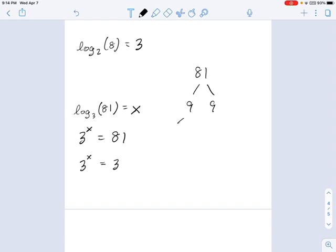81 is 9 times 9. And if we make a little factor tree here, each of those 9s is going to be a 3. So we've got 1, 2, 3, 4 threes. So you can use factor trees also to figure this out. And 3 to the x equals 3 to the 4? Well, there's another rule where if the bases are equal, then the exponents must be equal. It comes up from time to time. But what this means is if 3 to the x equals 3 to the 4, then x equals 4.